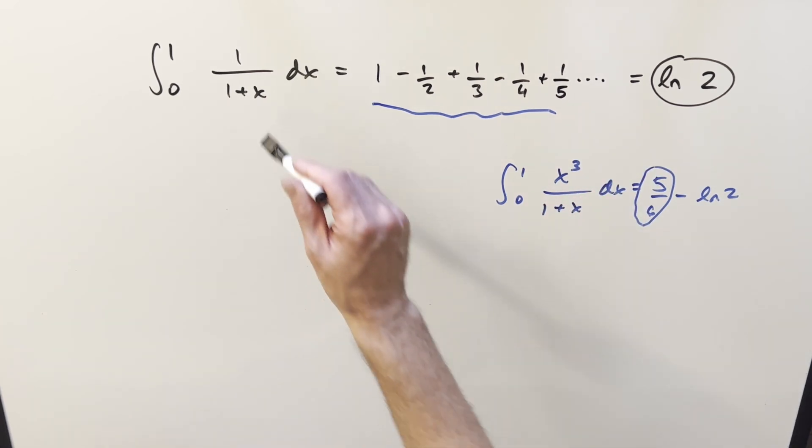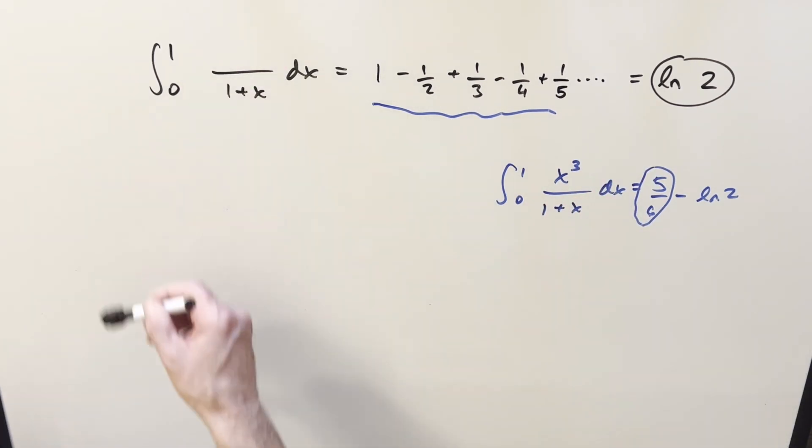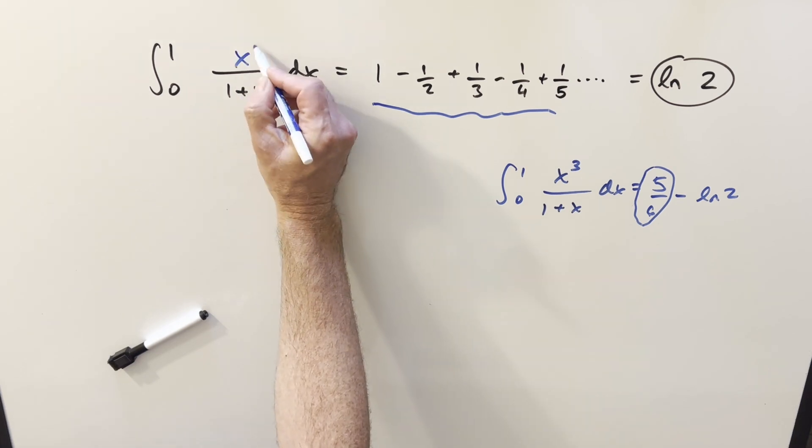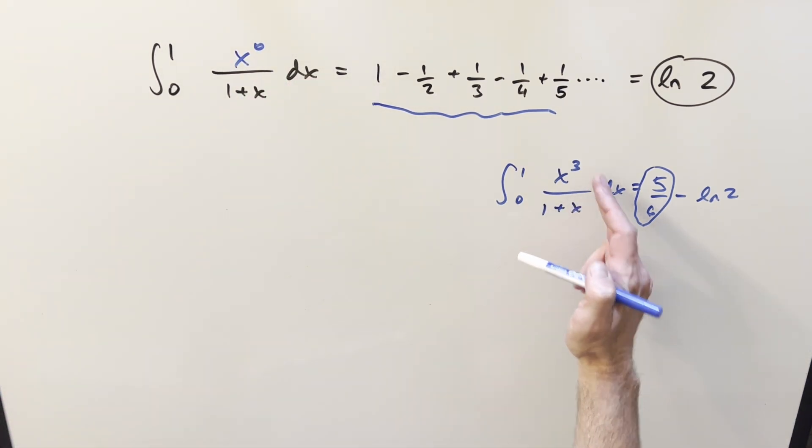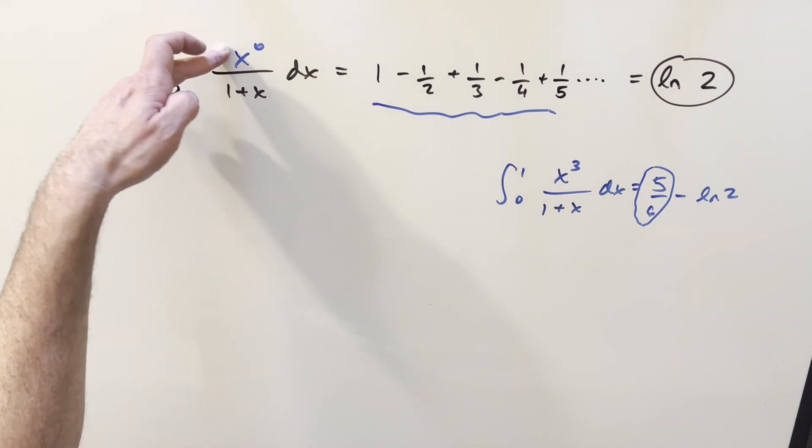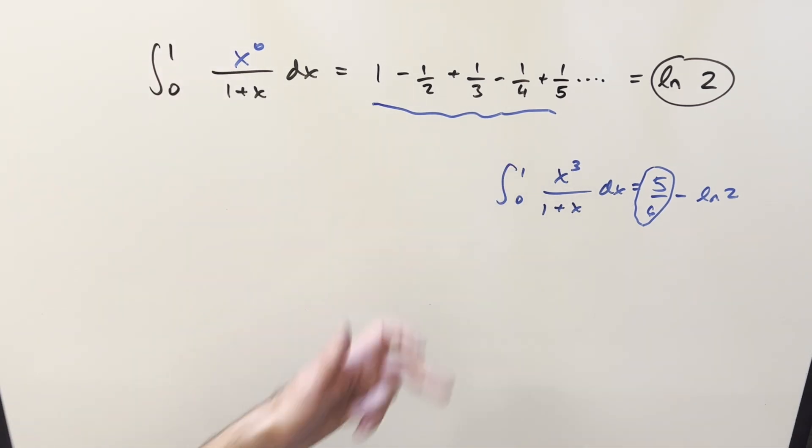And the relation here is just, if you take this 1 and we rewrite this, 1 can be written as x to the 0. So it's like when we have something like x cubed in the numerator, we get a variation on this. But if we go to an exponent of 0, then we get back the whole alternating harmonic series.